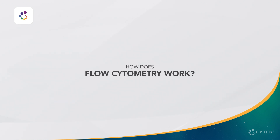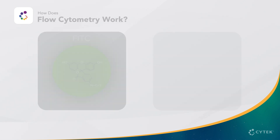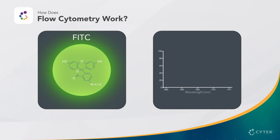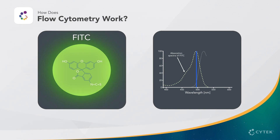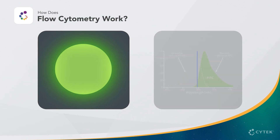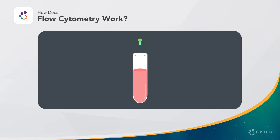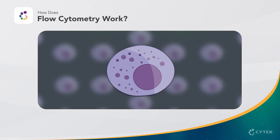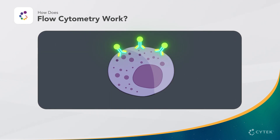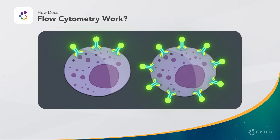How does flow cytometry work? The cytometer detects and measures fluorescent signals originating from fluorophores, which absorb light within a specific wavelength range, known as the excitation, and emit light at longer wavelengths, known as the emission. A fluorophore reagent is mixed with a sample in a single-cell suspension to specifically tag a cellular target, then its fluorescence on each cell is measured by the flow cytometer.